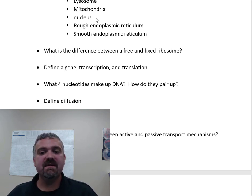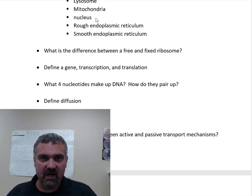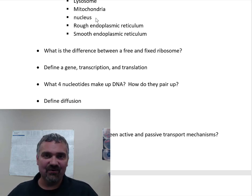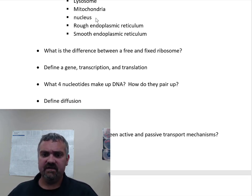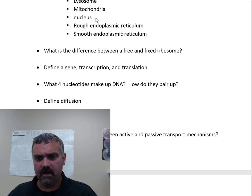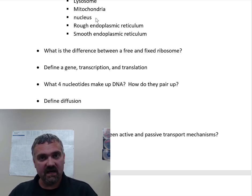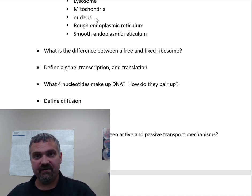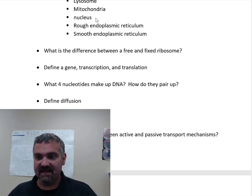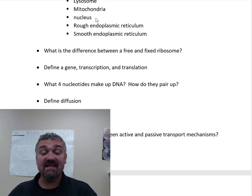The rough endoplasmic reticulum, or rough ER, is rough because it is studded — bedazzled — with ribosomes. Since ribosomes make proteins, the rough ER plays a role in proteins. The function of the rough ER is to modify and package proteins. Smooth ER has no ribosomes, so forget about proteins. The smooth ER's job is to inactivate toxins and synthesize some carbohydrates and fats. Cells in your liver — your hepatocytes — are going to have the most smooth ER, because the liver inactivates toxins and synthesizes things.